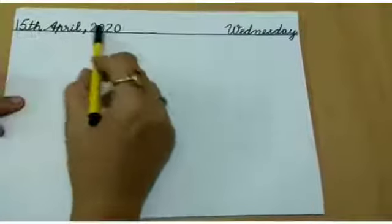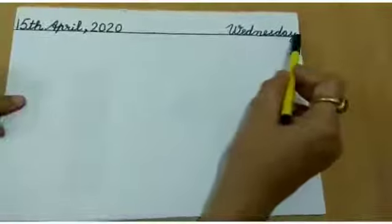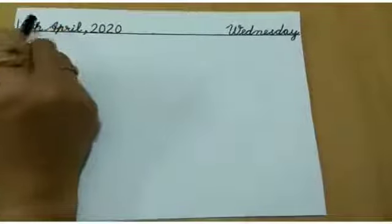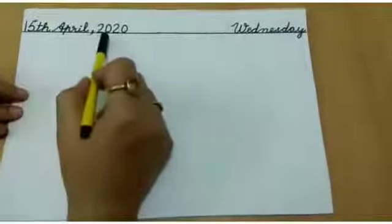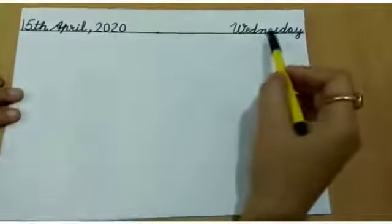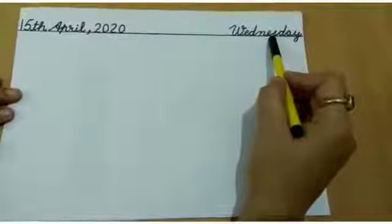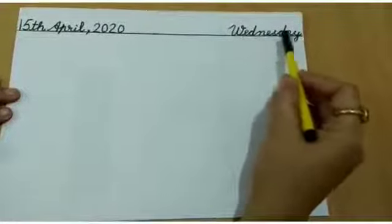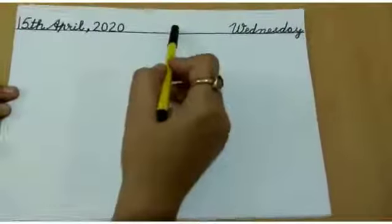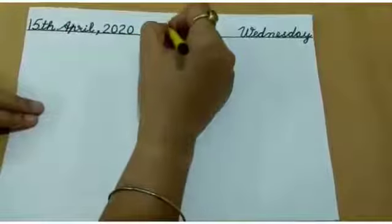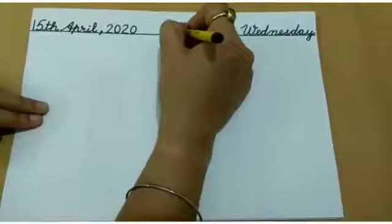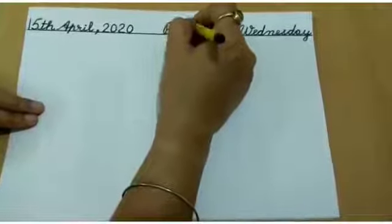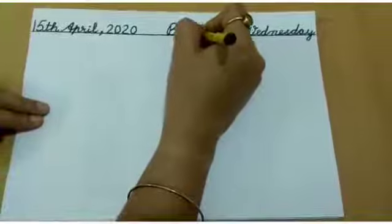First we will draw a margin line like this. Here we will write the date i.e. 15th April 2020. And here we will write the day i.e. Wednesday. In the center of the margin line we will write the topic i.e. Ball, that we are going to make today. Write B-A-L-L, ball.